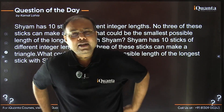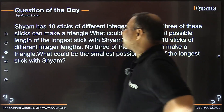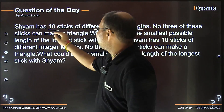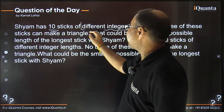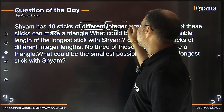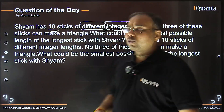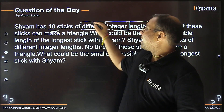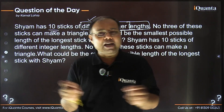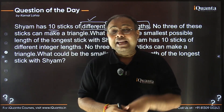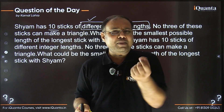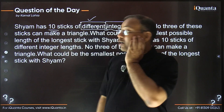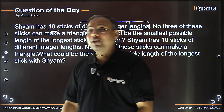Okay, let's look at it now. It says Sham has 10 sticks of different integer lengths. Remember that all sticks have different integer lengths, and all lengths are integral values — meaning positive integers only, so 1, 2, 3, and so on.